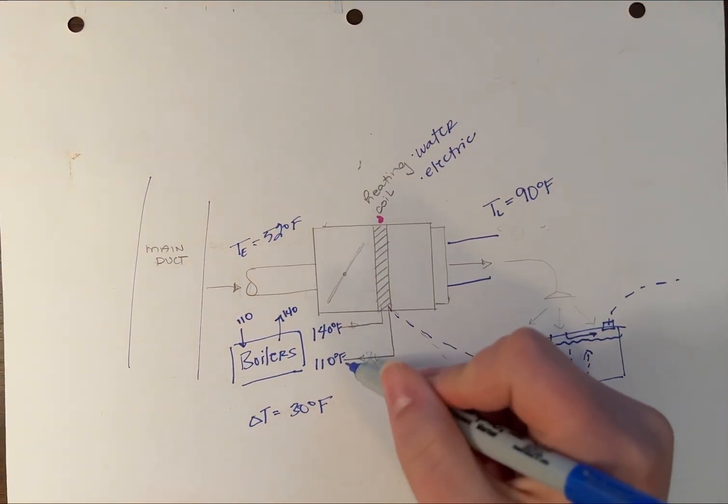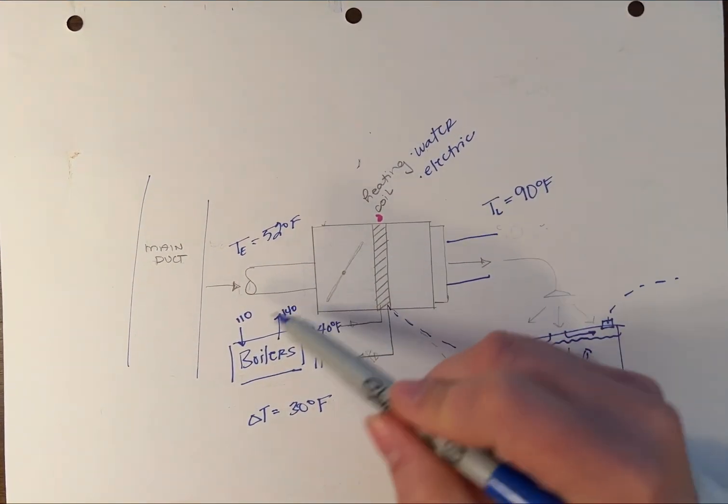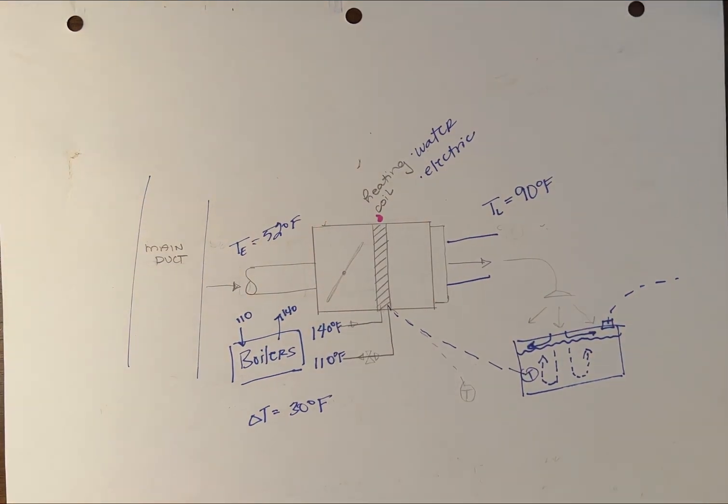These values can be found by looking at your boiler design conditions. And that's the basic understanding of a VAV box.